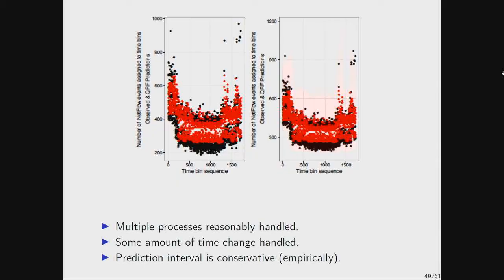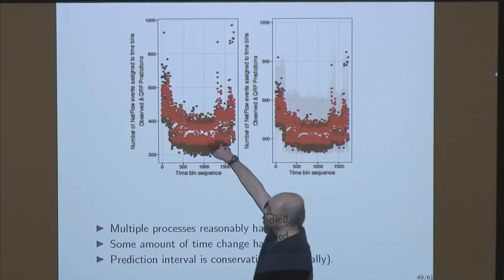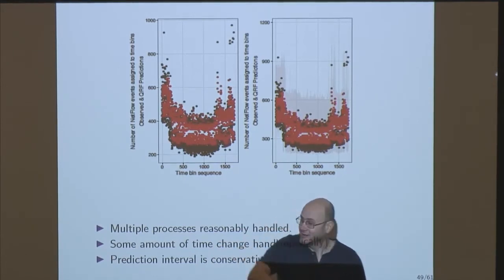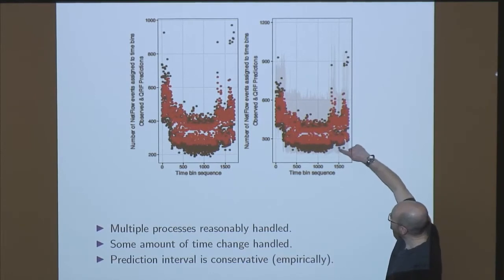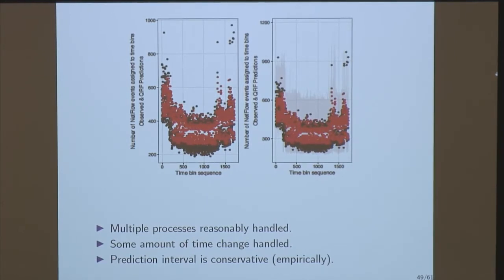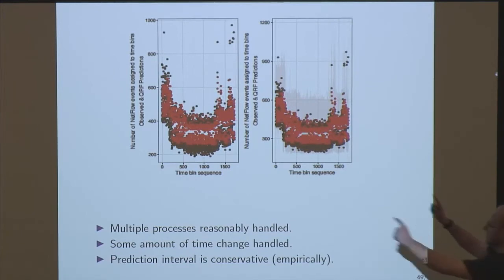That is QRF on one of those examples. The left-hand plot is just the prediction. Interestingly, the QRF has managed to capture the fact there are two processes, whereas any sort of direct mean estimation wouldn't because the mean is in the middle. There's a very pale pink area — that's the QRF prediction interval evaluated at each point, and that's doing pretty well. Empirically it's conservative: it doesn't have quite the right coverage, but it's in the direction of being conservative. There was about a day's worth of learning done before; this is the out-of-sample prediction data. It's not throwing many flags, which I think is desirable.